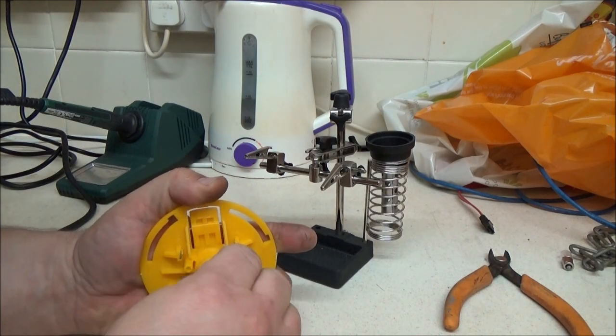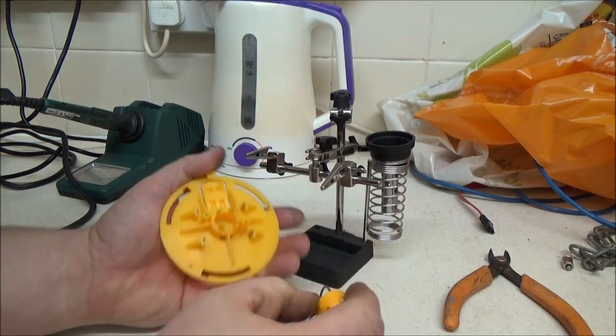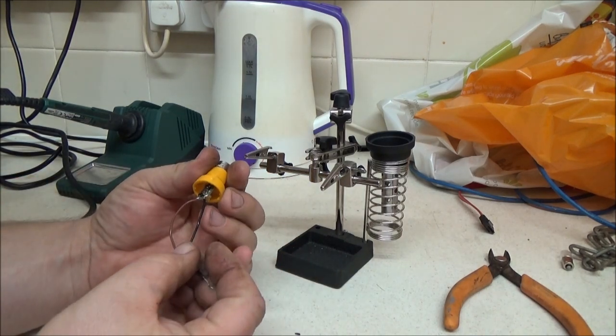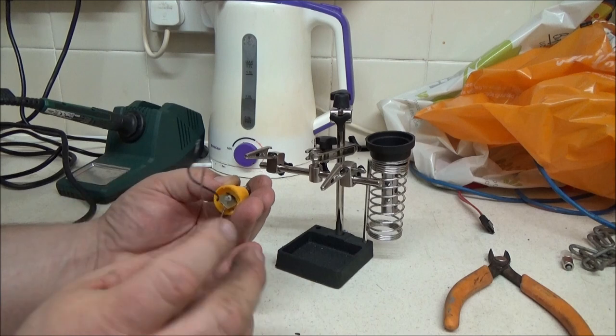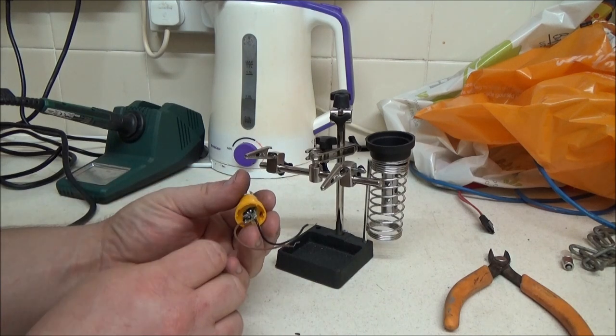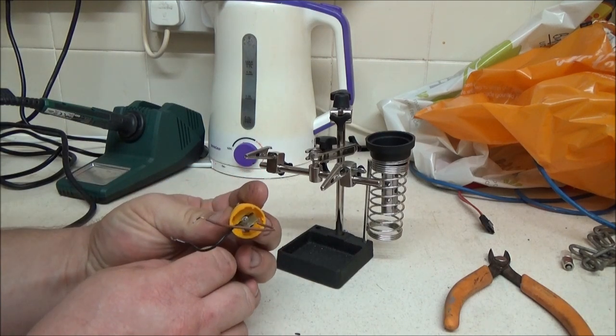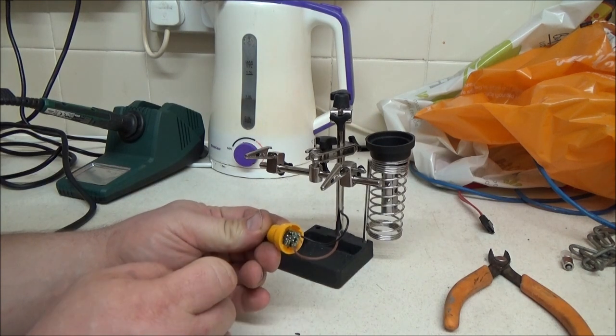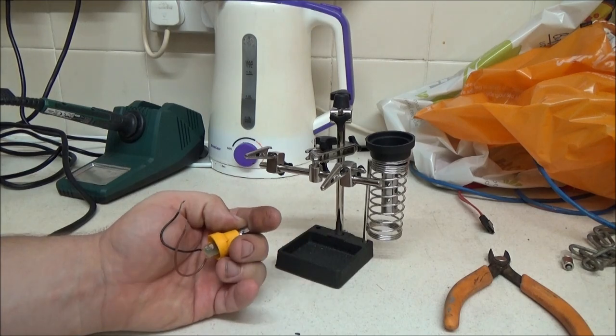I should be able to just wiggle this off. Pull those wires through. This is the bit we want. Now, as you can see, this one is actually totally different. I can't do it with this one. It's got a different LDR on it and only the two different contacts.